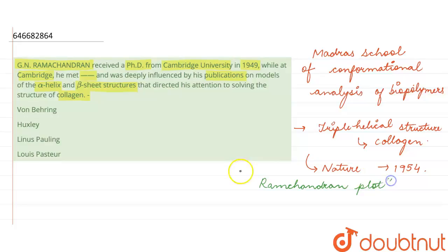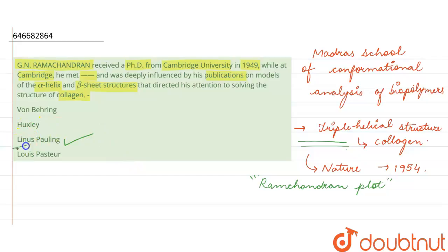He did his PhD from Cambridge University in 1949 and there he met Linus Pauling. So option 3 is the correct answer here — he was influenced by Pauling's publications on models of the alpha helix and beta sheet structures that directed his attention to solving the structure of collagen, which he published in 1954. The correct answer is option 3.